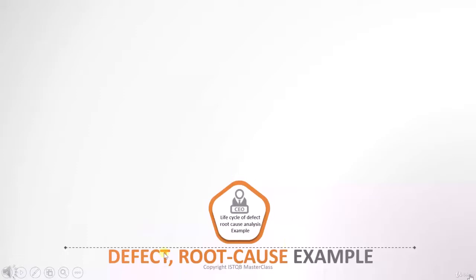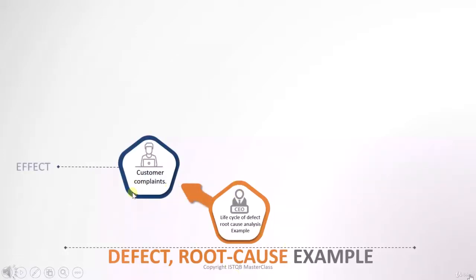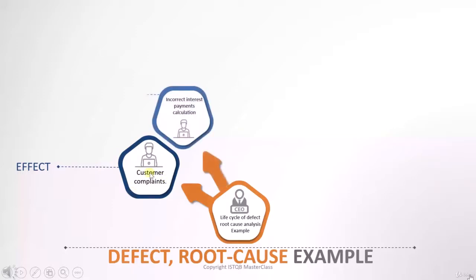So from where does this root cause analysis start? It starts with customer complaints, and that is the effect. If you have a defect in your system, the customer is complaining because of the failure — because he has come across some failure. The failure is incorrect interest payment calculation. The customer is trying to perform some interest calculation but is not getting the output as per expectation, and that is why it is a failure.